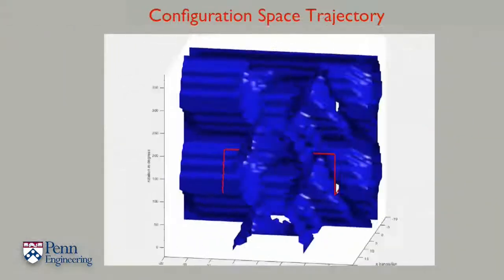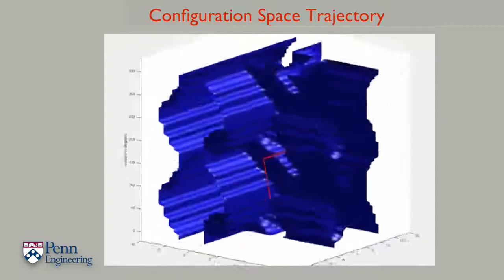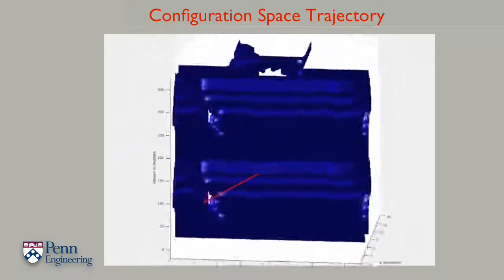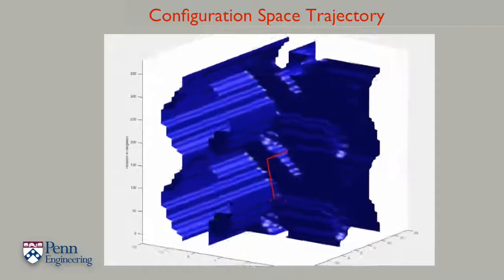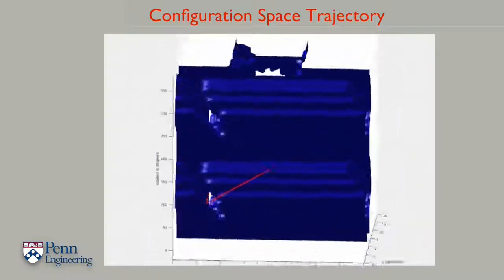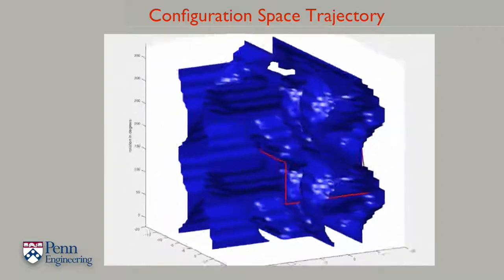In this second movie, we are visualizing the trajectory of the robot through configuration space as a red line. Notice how this red line snakes in and around the configuration space obstacle, avoiding penetration as it moves from the start configuration to the end configuration.